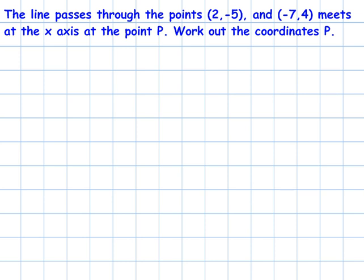The line passes through the points (2, -5) and (-7, 4), and it meets the x-axis at point P. Work out the coordinates of P.